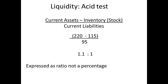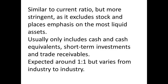We can now calculate the ratio: £220 million less £115 million, then divide by £95 million, giving a ratio of 1.1 to 1. Note this has not been expressed as a percentage. This differs from the current ratio because inventory has been excluded — only the most liquid assets are included in this calculation.